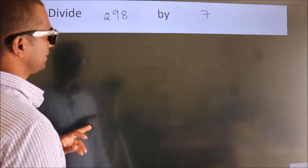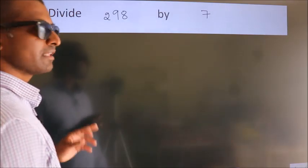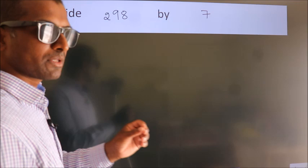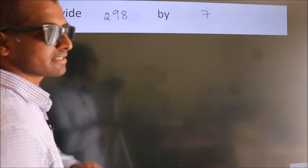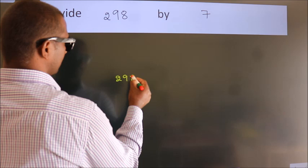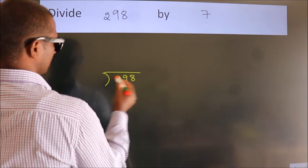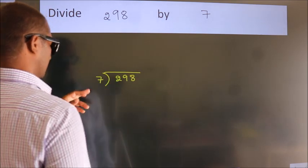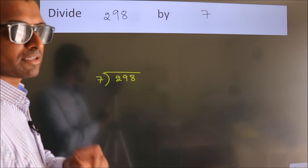Divide 298 by 7. To do this division, we should frame it in this way. 298 here, 7 here. This is your step 1.